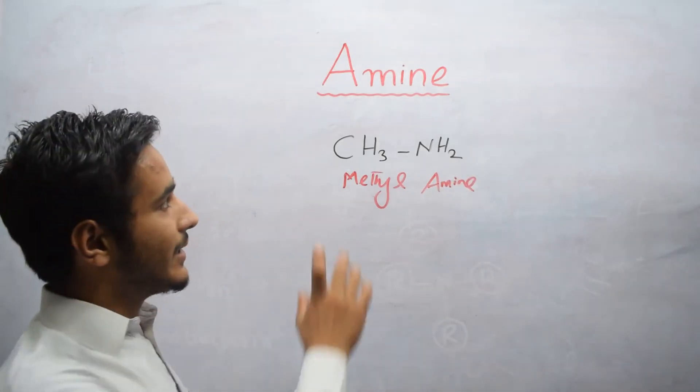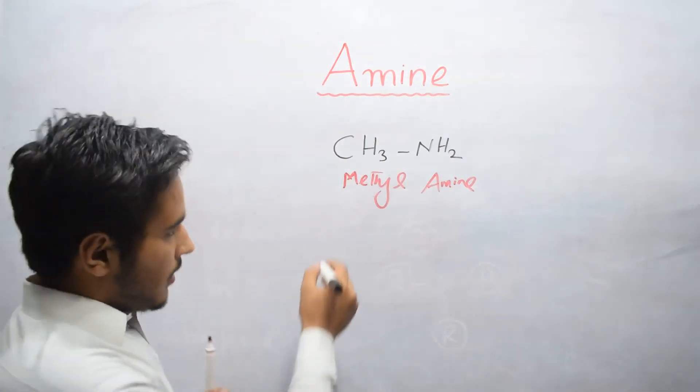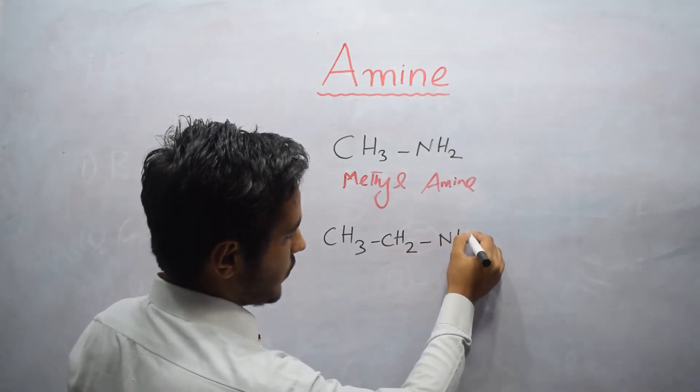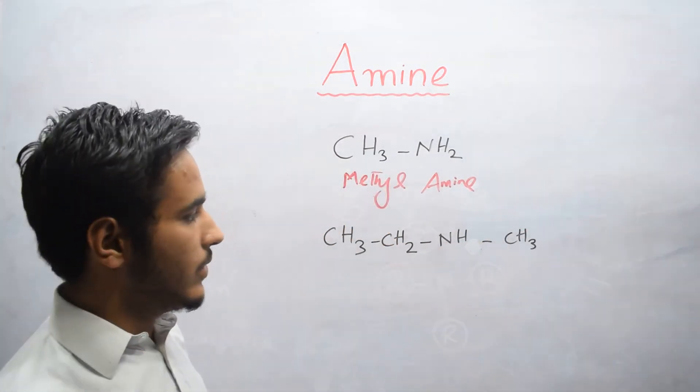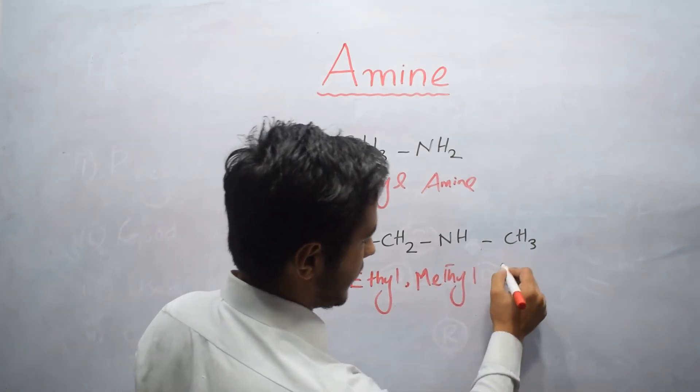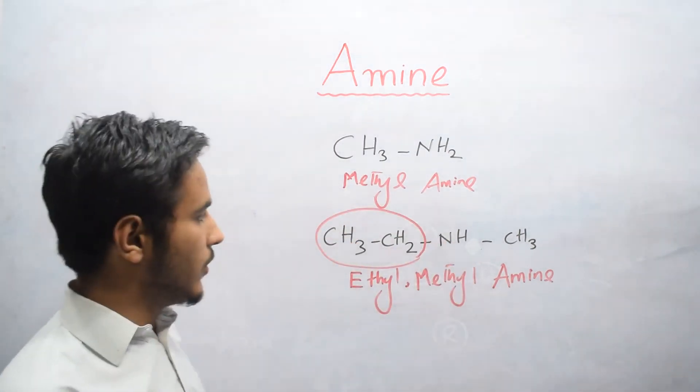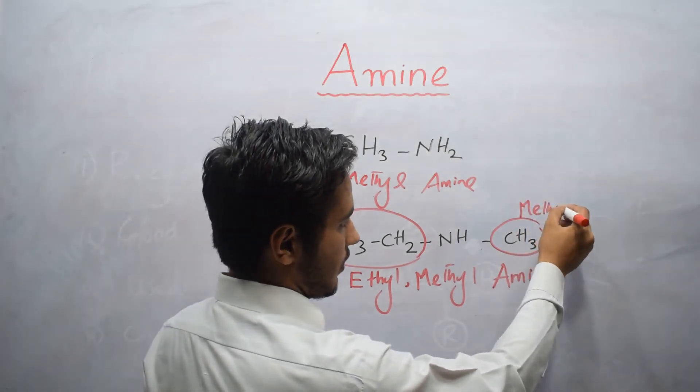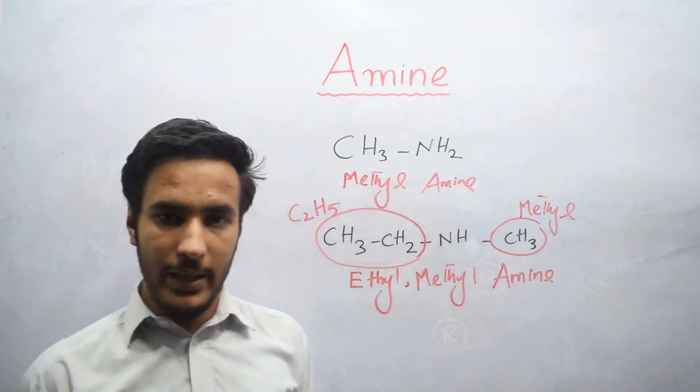In next video, we will do the nomenclature of Amine. Then the nomenclature will be easy. Now we will just do simple examples. Now if we have CH3 bonded with CH2 and bonded with NH2, and on this side we have CH3. And here we have now CH. So its name is now Ethyl Methyl Amine. Because on one side we have Ethyl group, which is C2H5, and on other side we have Methyl group, which is CH3. So its name becomes Ethyl Methyl Amine.